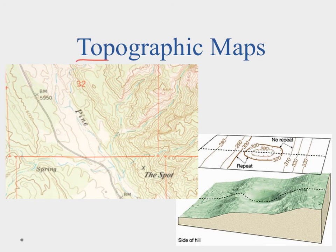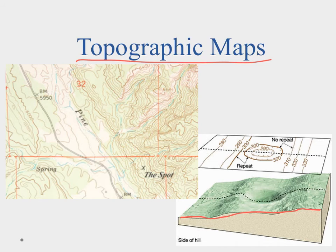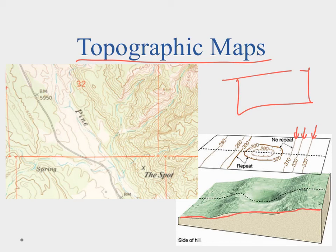A topographic map is neat because it takes the two-dimensional map and adds a third dimension — the dimension of elevation. We can see a land form on the map with contour lines added in. These contour lines give us a clue on elevation — how high something is above the surface of the oceans. You can see a little incline going from 280 to 290 to 300, then 310, 320, 330. We can also see a little depression marked on the map. Topographic maps give us an idea of elevational changes.